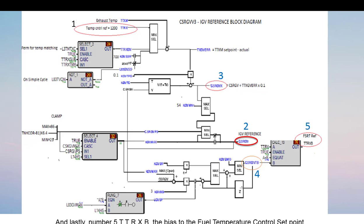And lastly, number 5, TTRXB, the bias to the fuel temperature control set point.